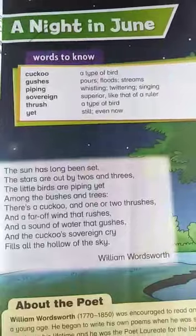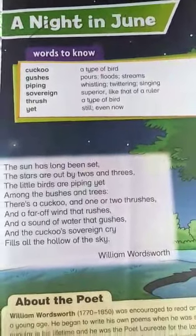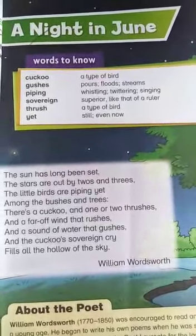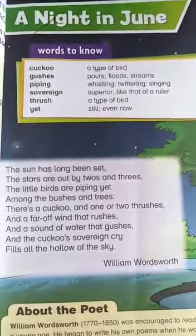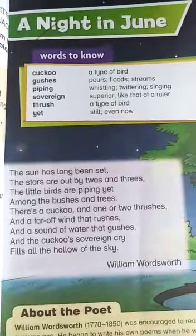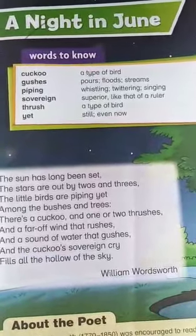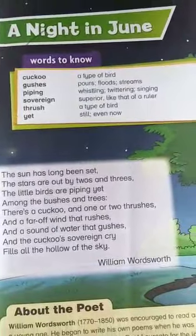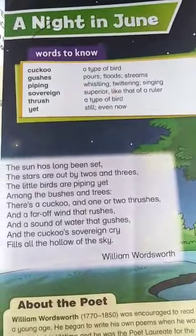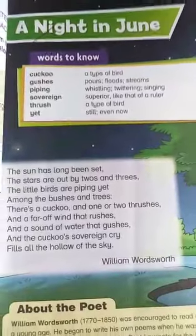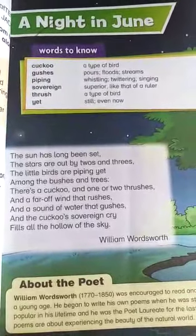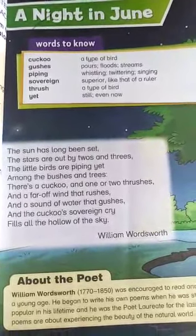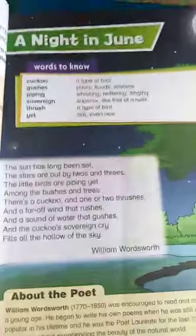What is June? June is the name of a month. And what is night? Night is when it is dark. In this poem we are going to describe the night of a June. Before this, I want to tell you that I have received many complaints that I deliver all of my lectures in English, so from today onwards I'm going to describe them in Urdu as well for your convenience, so you can better understand.